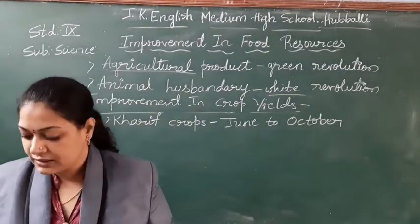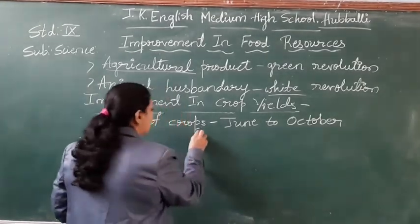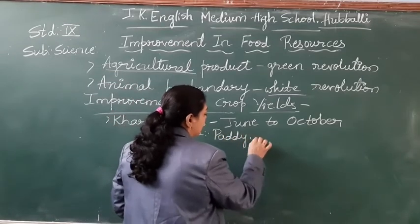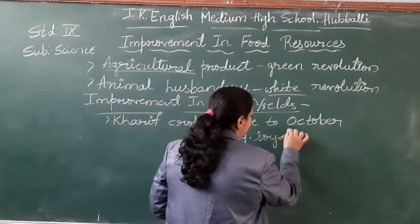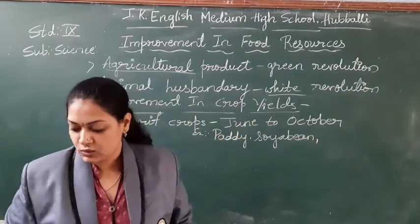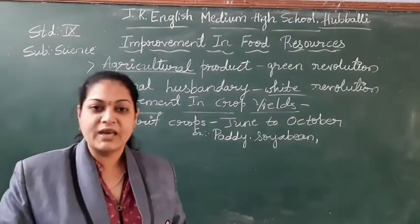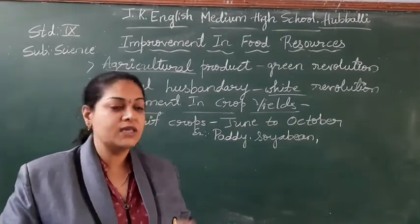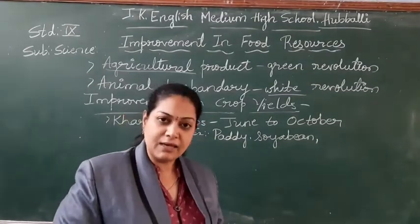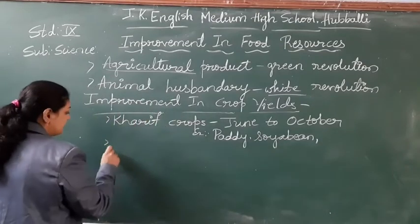Which crops come under the rainy crops? It may be paddy, soya bean, different types of grass, maize, and cotton. These are all the rainy season crops.